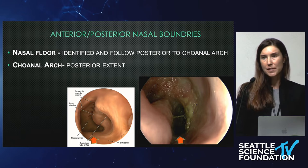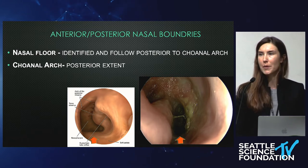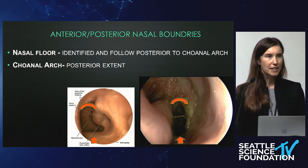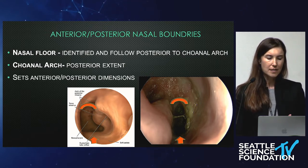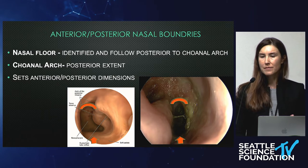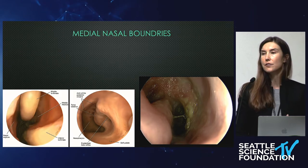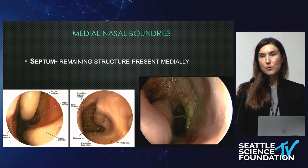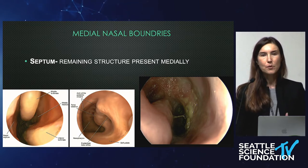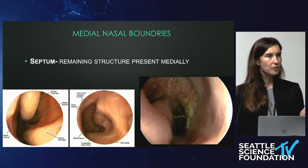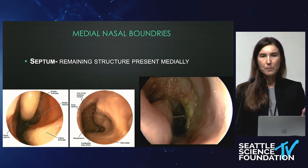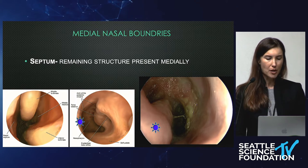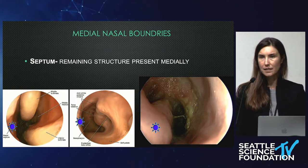The coanal arch — most people still have their coanal arch, so you'll be able to find that, and it's going to set that anterior-posterior extent. Those are your dimensions. Then the next step is defining the medial-nasal boundary. In these patients it's going to be the septum or the remnant of the septum — some people will only have a little ridge, some have their full septum intact, some have perforations. But you want to be looking for your septum.